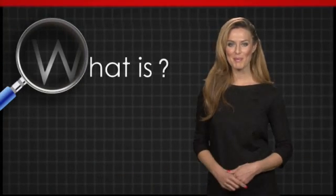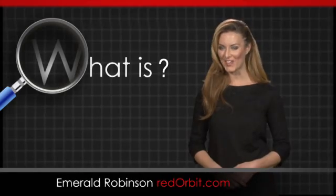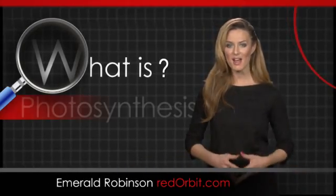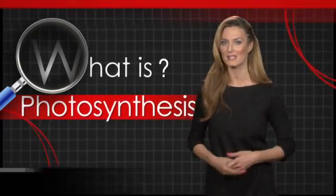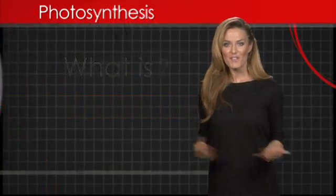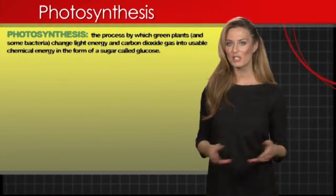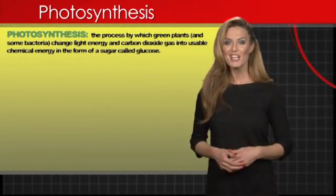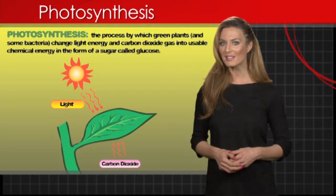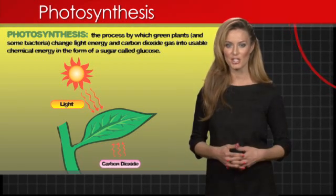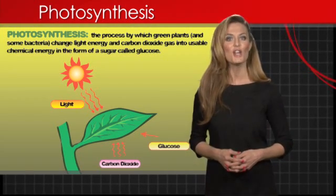Hi, I'm Emerald Robinson, and in this What Is video, we're going to discuss one of biology's most important processes, photosynthesis. Photosynthesis is the process by which green plants and some bacteria change light energy and carbon dioxide gas into usable chemical energy in the form of a sugar called glucose.